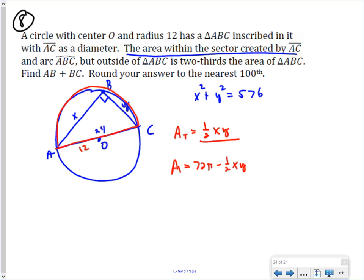And the relationship is that area is two-thirds the area of the triangle. So we know that 72π minus one-half XY is two-thirds the area of the triangle.